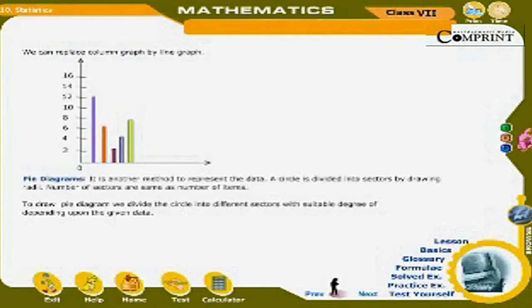We can replace column graph by line graph. Pi Diagrams: It is another method to represent the data. In a circle, the circle is divided into sectors by drawing radii. Number of sectors are same as number of items.